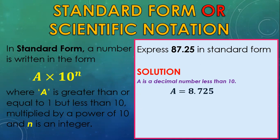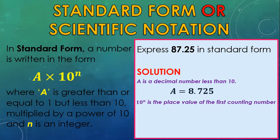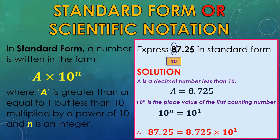Now that we have identified a, let us find 10 to the n. Please note that 10 to the n is the place value of the first counting number. In this example, our first counting number is 8, and 8 is in the tens place. Therefore, 10 to the n is equal to 10, and in index form, 10 to the n is 10 to the first power. So 87.25 in standard form is 8.725 times 10 to the first power.